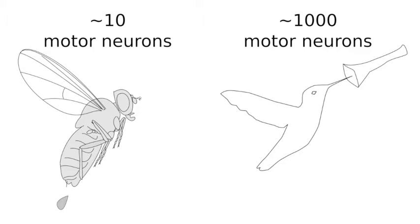In comparison, each of the muscles controlling a hummingbird's wing, or your fingers for that matter, are innervated by tens to hundreds of neurons, a density that allows for precise control through graded recruitment.